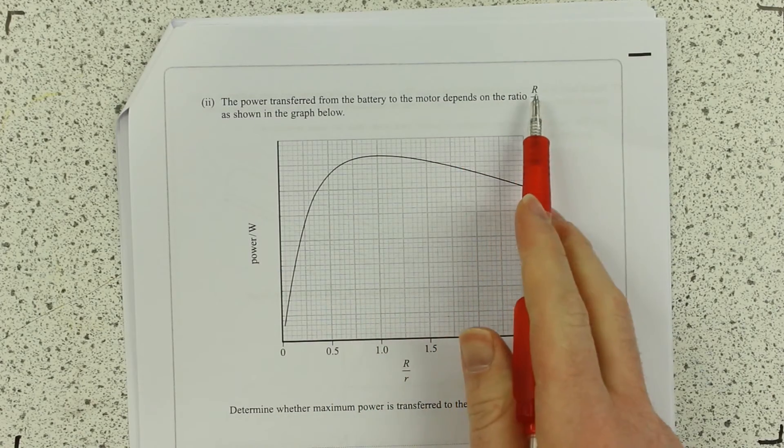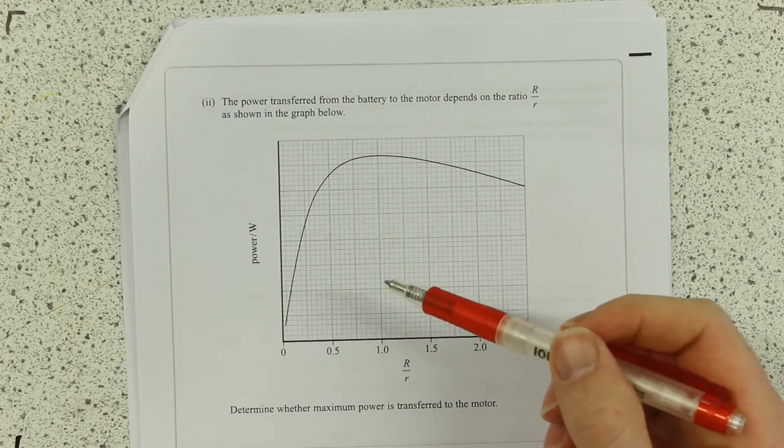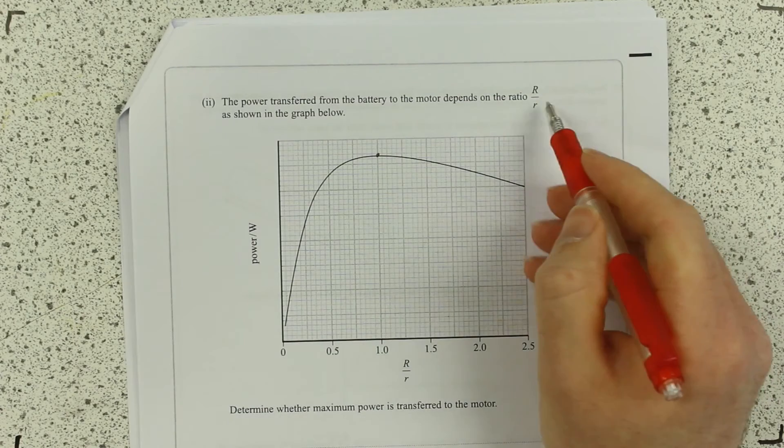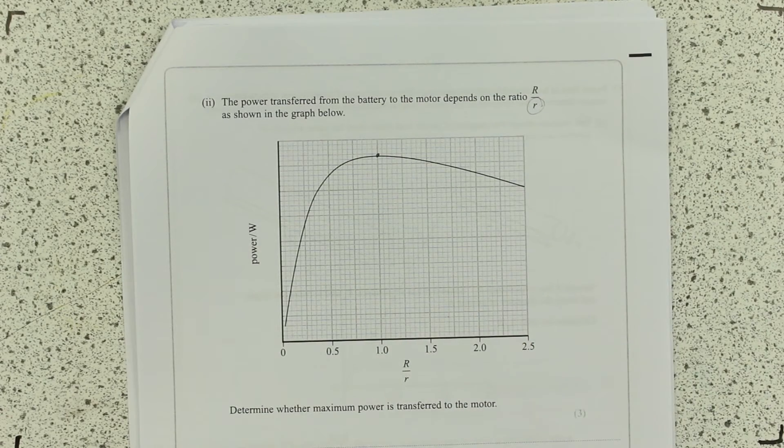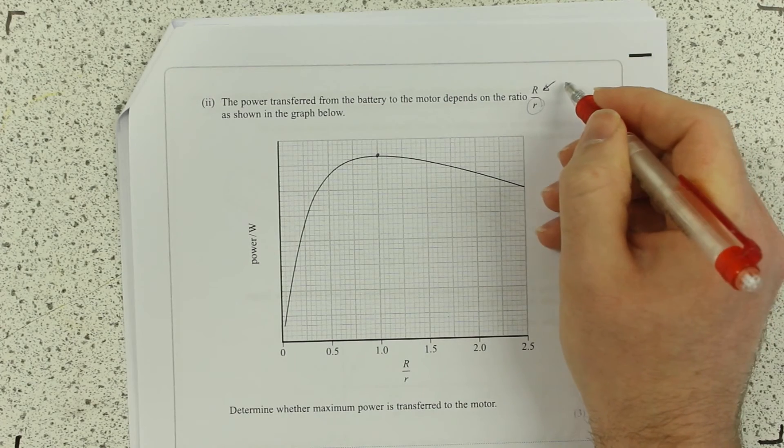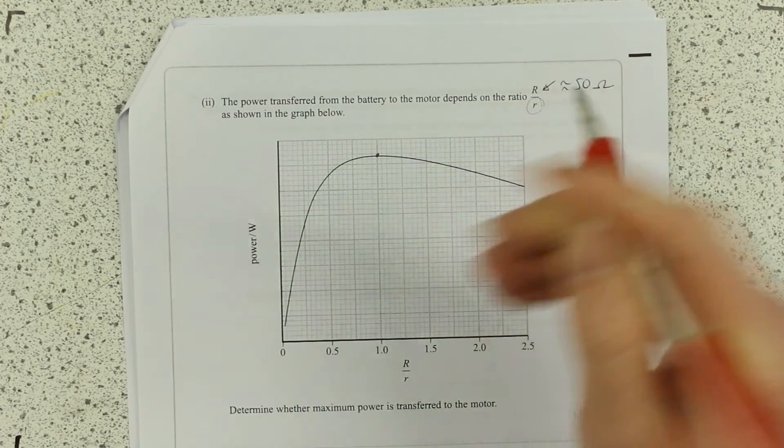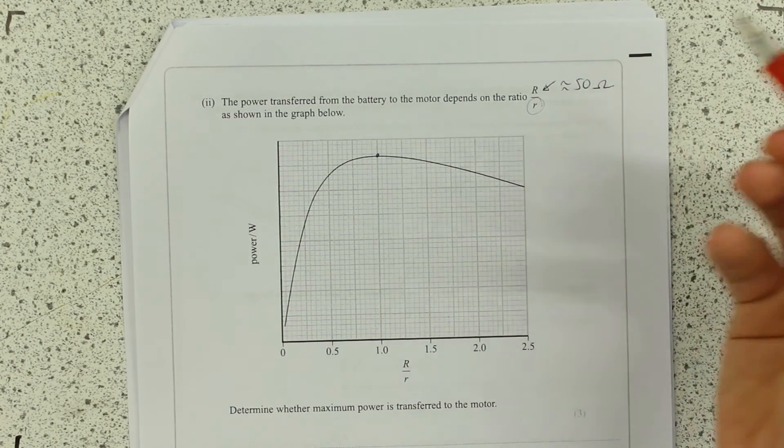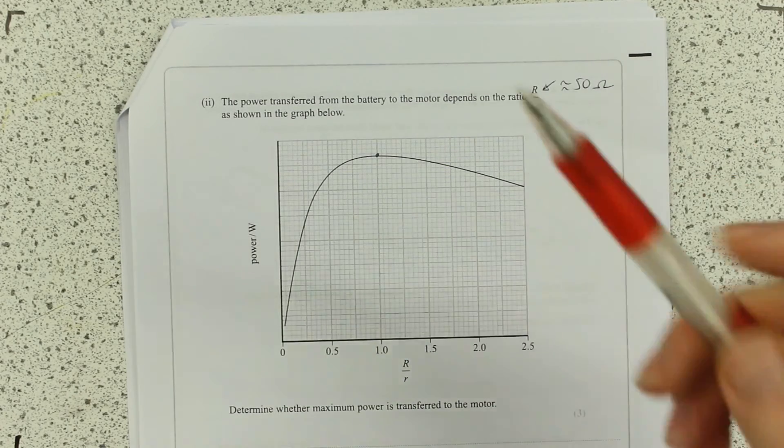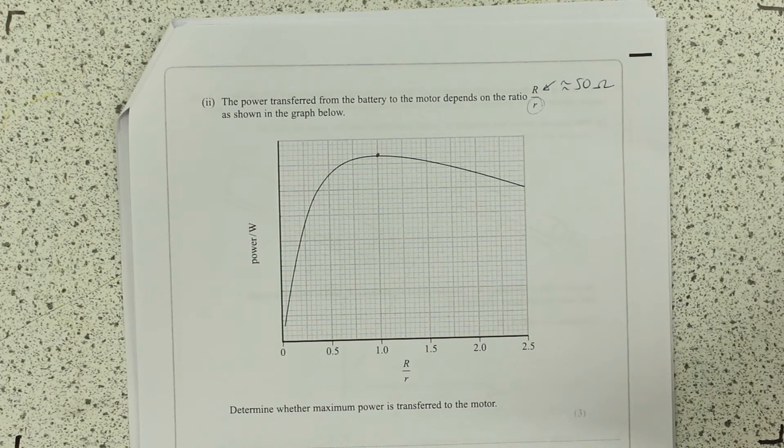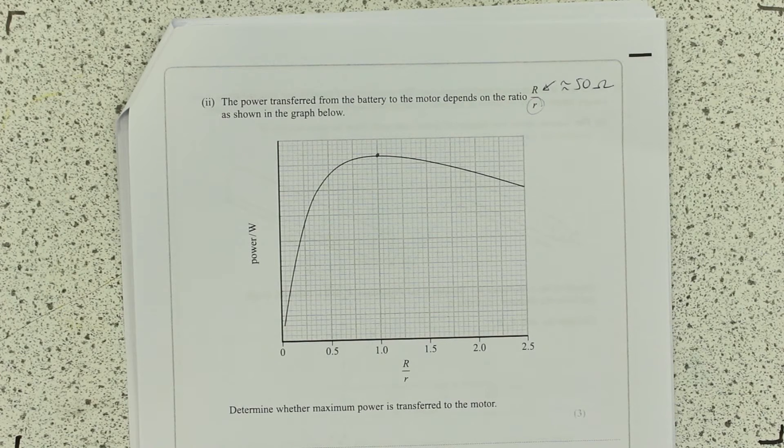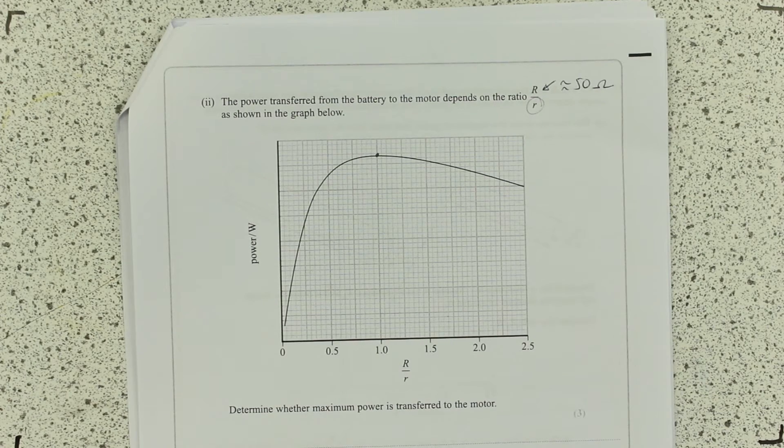47.4 ohms, which is approximately 50 ohms. This is a nice one because you can check it, but gosh, it's only one mark. So get that down, get the mark in the bag. Power transferred from the battery to the motor depends on the ratio of R over little r. It's shown in the graph below. So, this point here is the maximum power transferred to that. I hope you remember what little r is. It's the internal resistance and R is the load resistance. We know the load resistance is about 50 ohms from the last one. We just calculated that. That's why they give you a show that, so you can carry on with this one here.